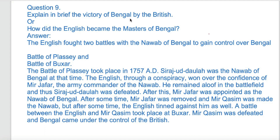Next question: explain in brief the victory of the British in Bengal. How did the English become the masters of Bengal? The English fought two battles with the Nawab of Bengal to gain control — the Battle of Plassey and the Battle of Buxar.